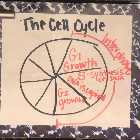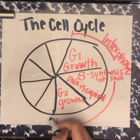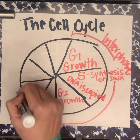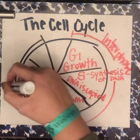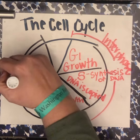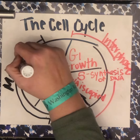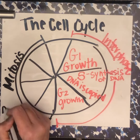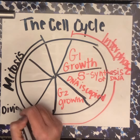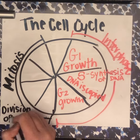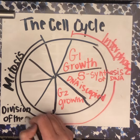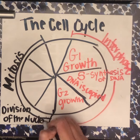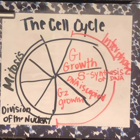After G2, the cell is ready to divide, and so here is going to be mitosis. Mitosis is actually the division — not of the whole cell, but of the nucleus. So mitosis is the division of the nucleus.